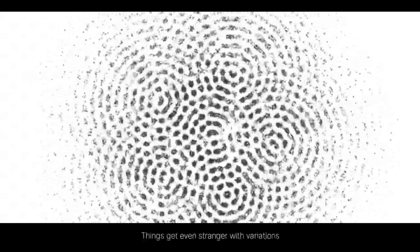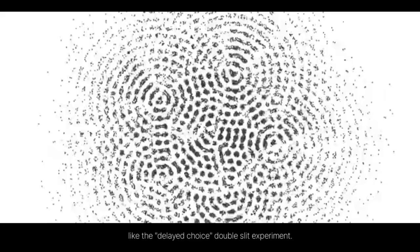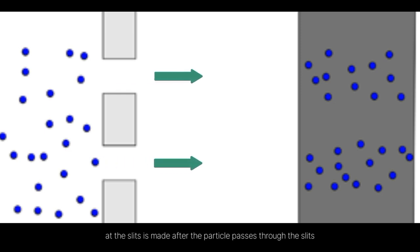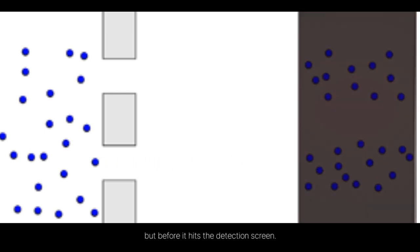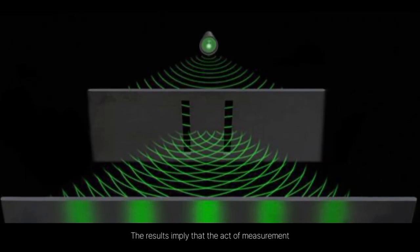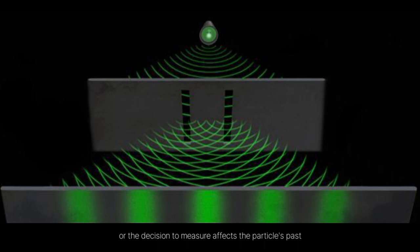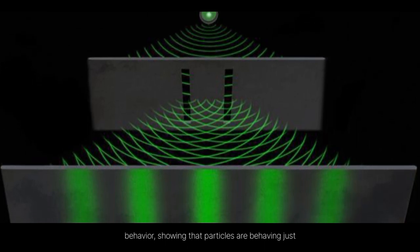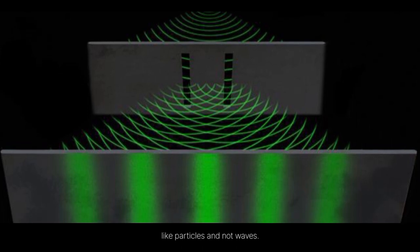Things get even stranger with variations like the delayed choice double slit experiment. Here, the choice of whether or not to measure the particle at the slits is made after the particle passes through the slits, but before it hits the detection screen. The results imply that the act of measurement, or the decision to measure, affects the particle's past behavior.